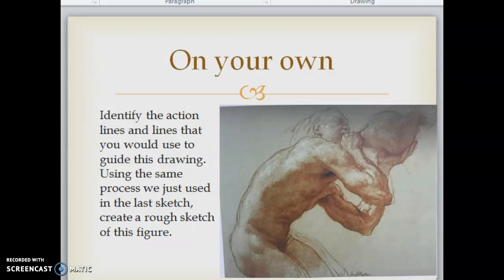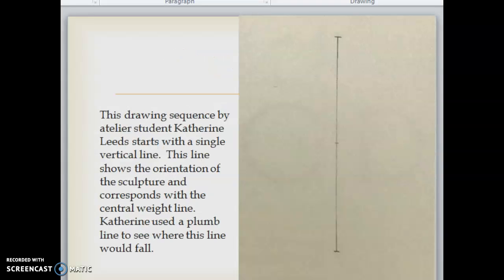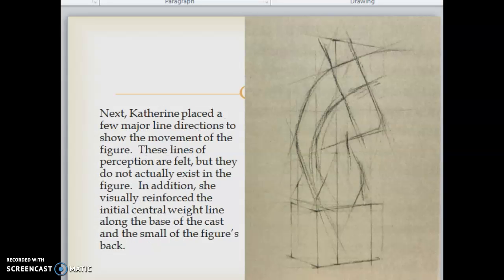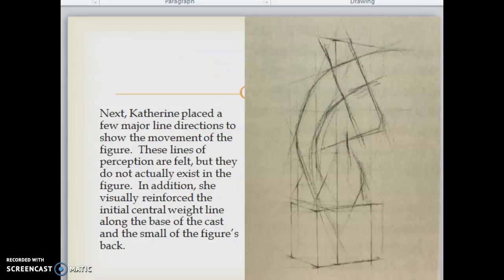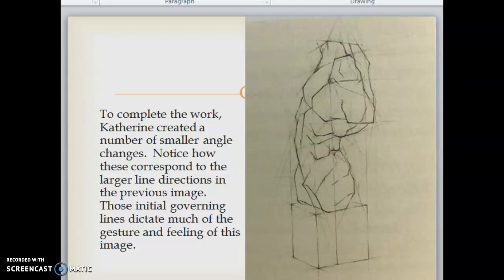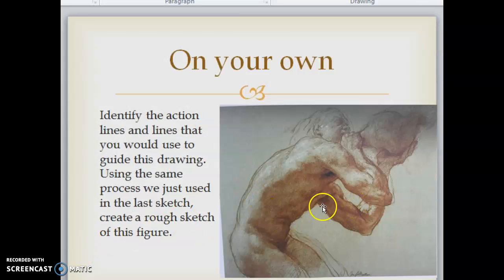So what I want you to do for your assignment is, on your own, I want you to identify the action lines and lines that you would use to guide this drawing. Using the same process we just used in the last sketch, create a rough sketch of this figure. So you're going to find where the weight, the center of weight is, and you're going to create that plumb line. You're going to add in the action lines that help kind of form that shape of that figure. And then you're going to go in and add those details and create a nice rough sketch of this figure. Awesome. Have a good day, guys.